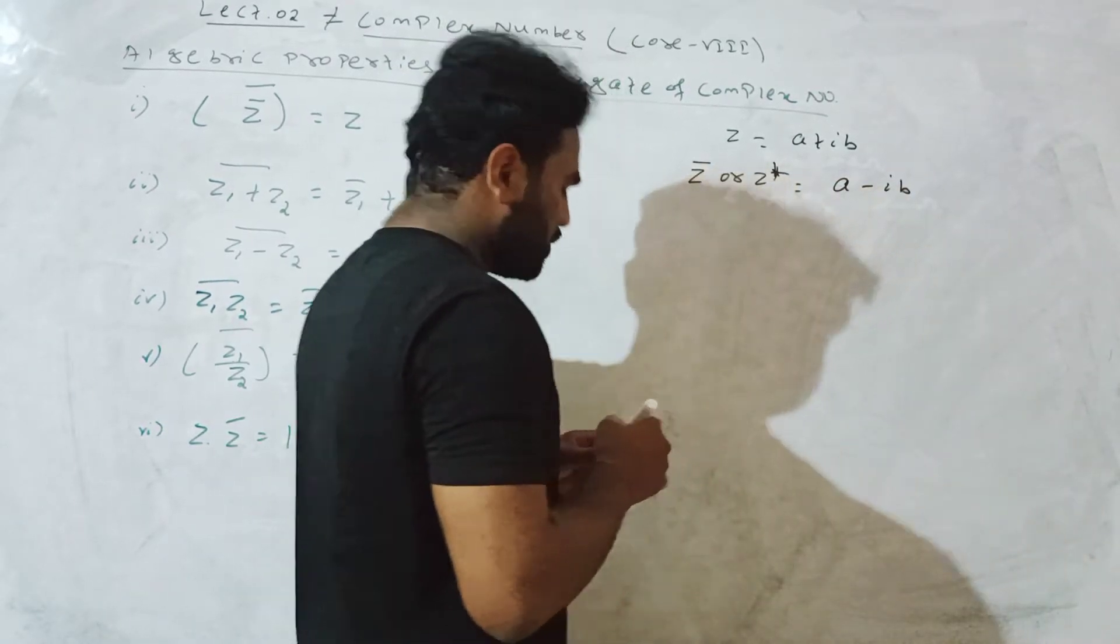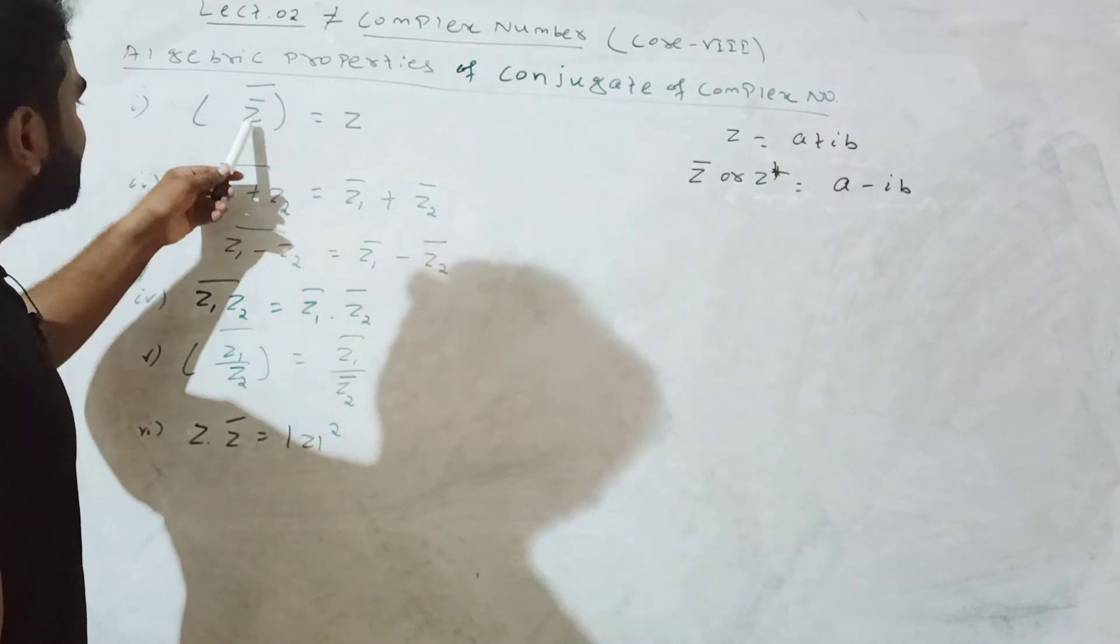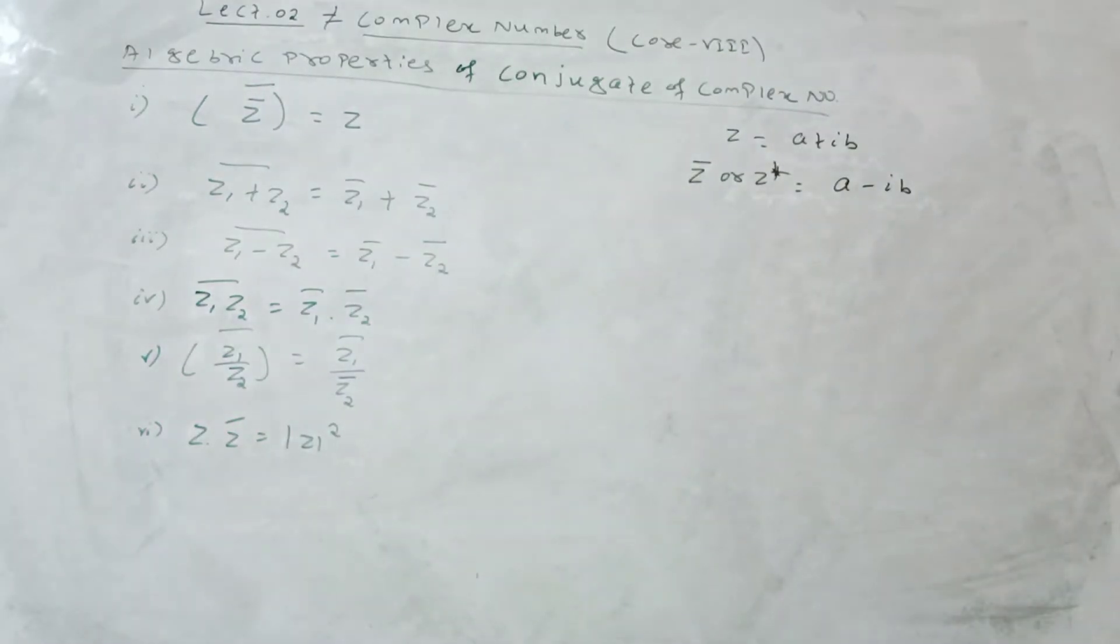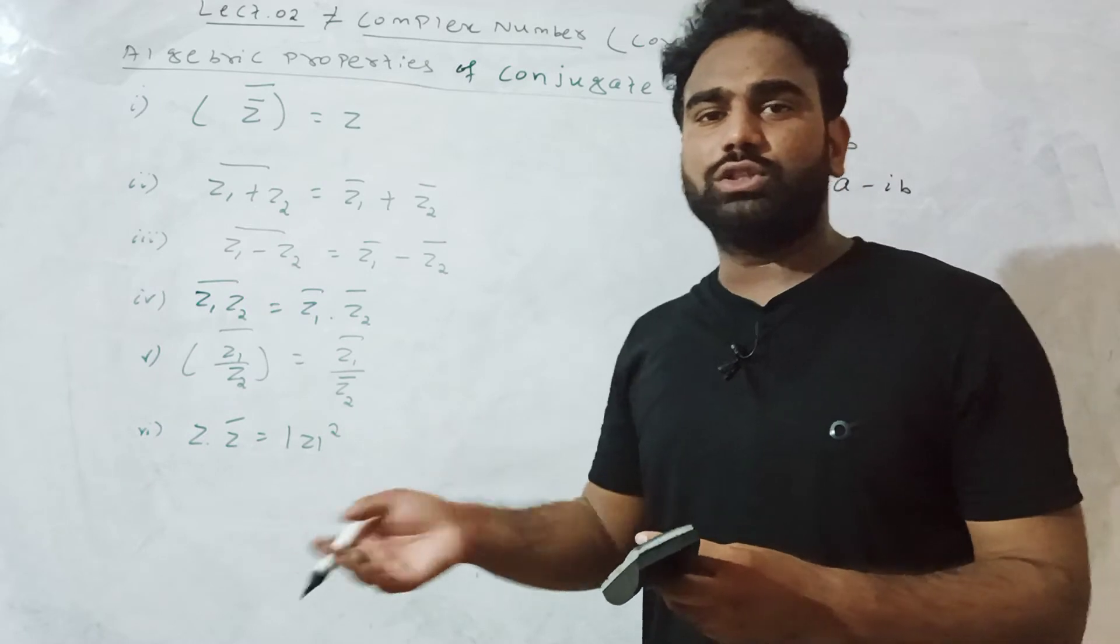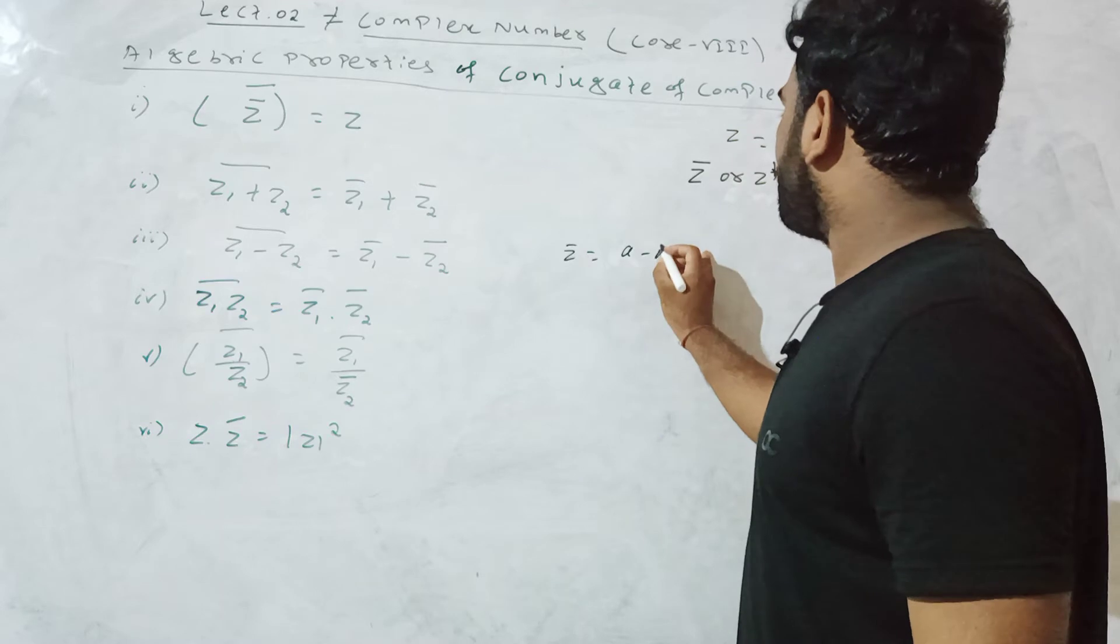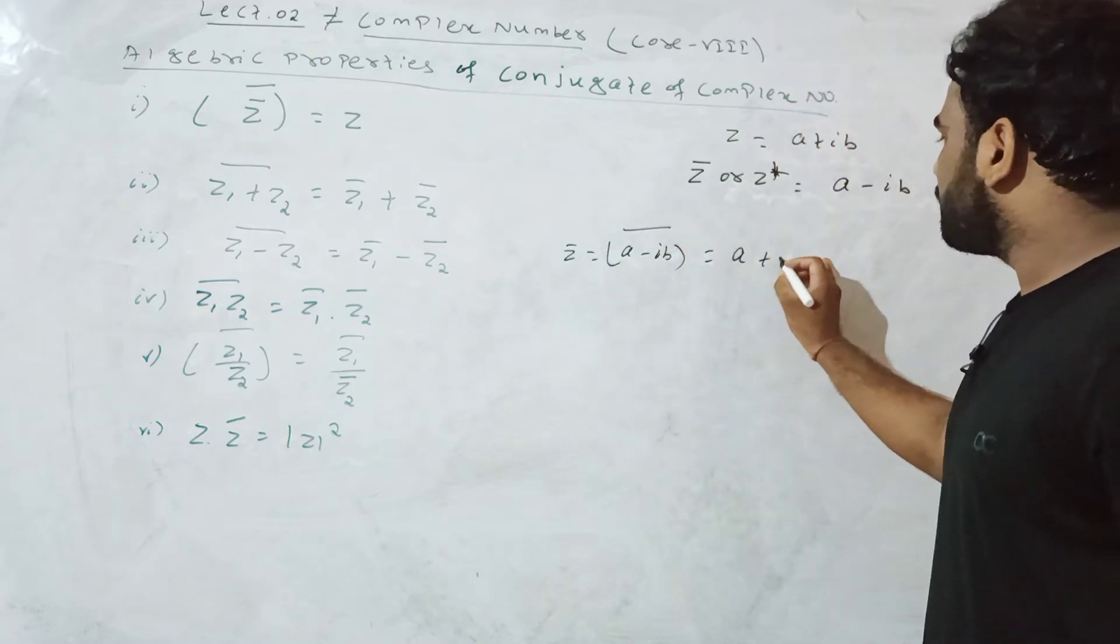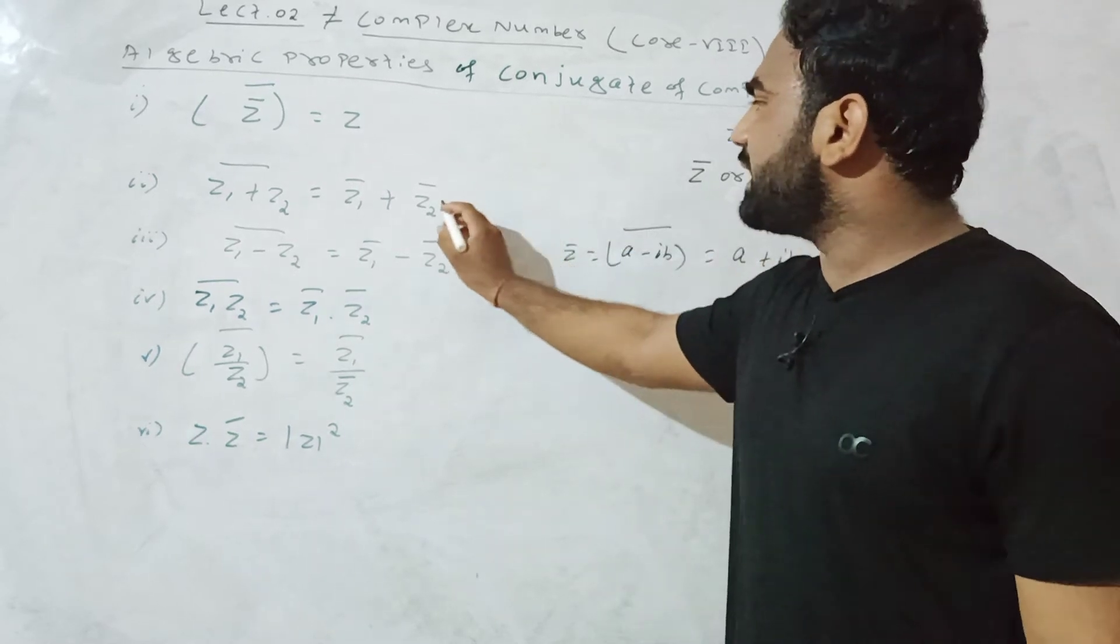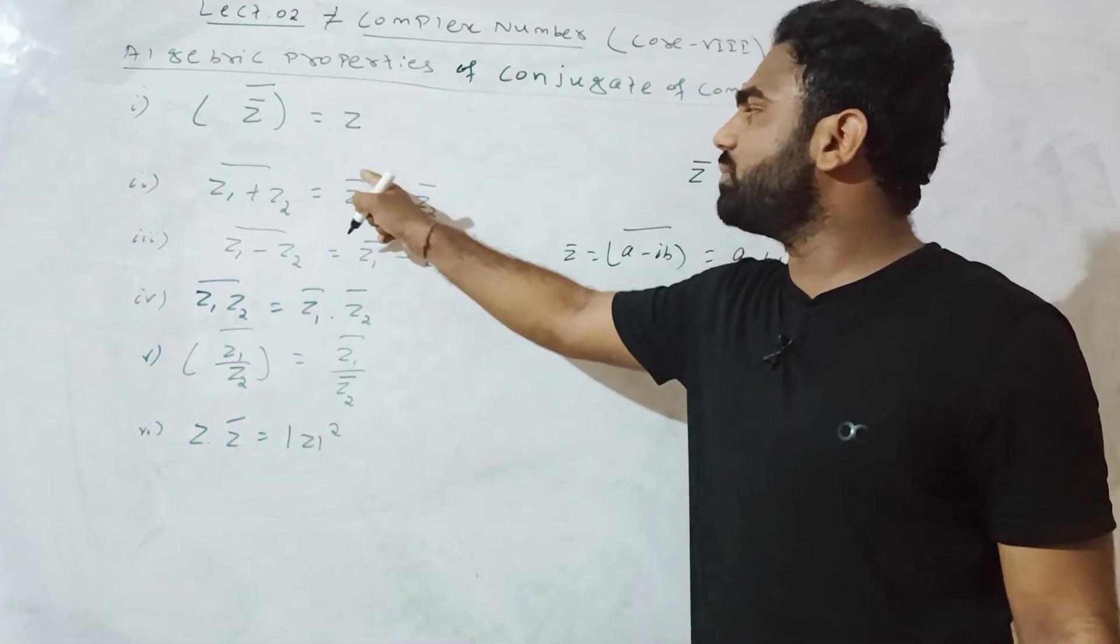The first property: z bar bar equals z. If z equals a minus ib, then z bar bar, taking the conjugate twice, gives a plus ib, which equals z.